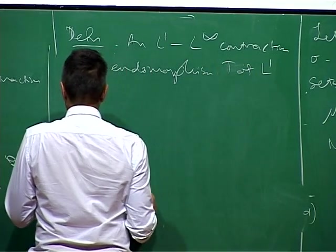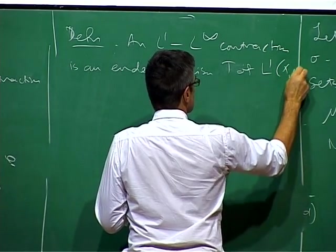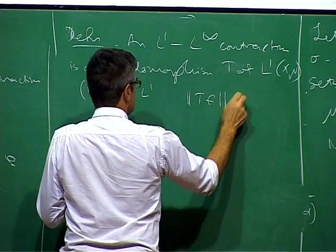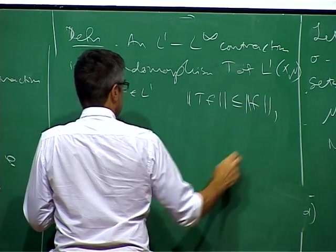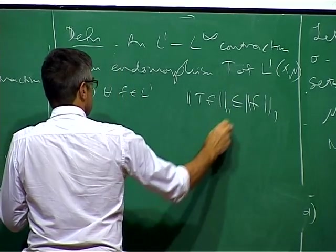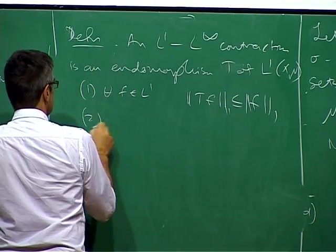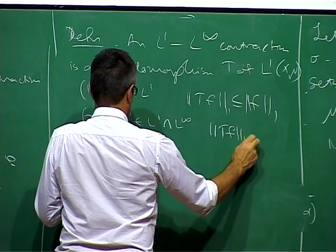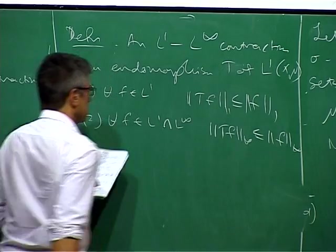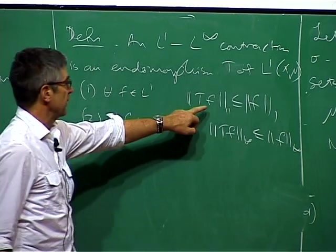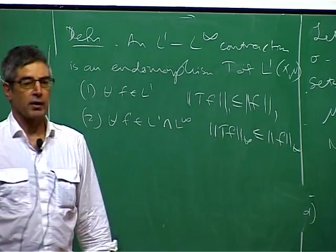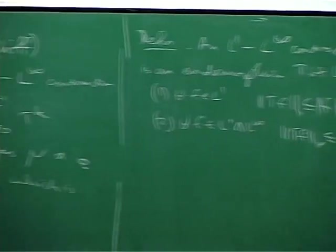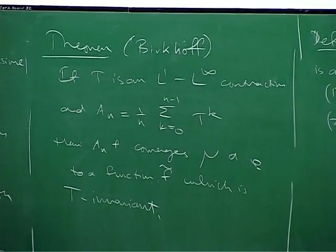I would like to tell you what an L1 L infinity contraction is. And it's very clear that composing F with a measure preserving transformation satisfies both of these conditions. But provided you have those two conditions, then you can actually prove convergence to a function which is L1, L infinity.